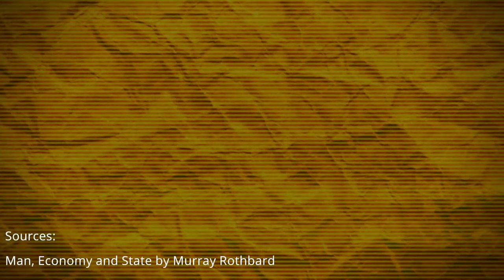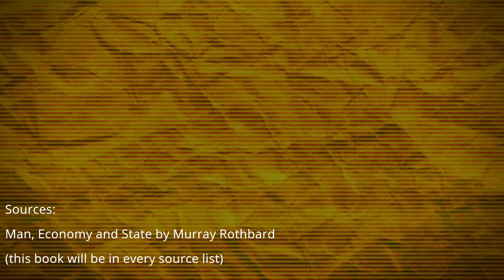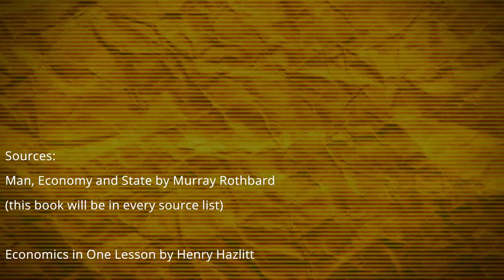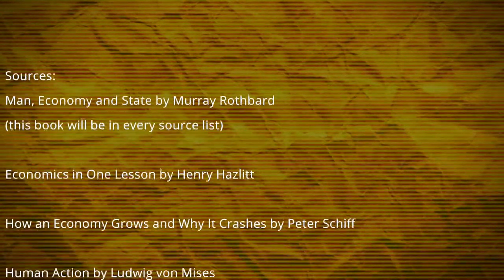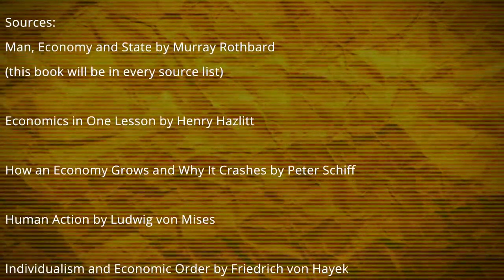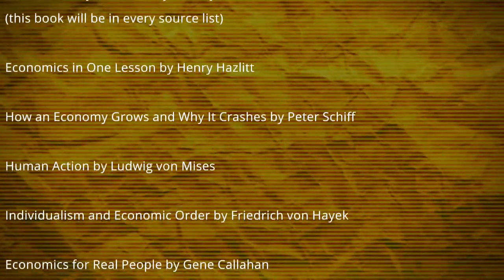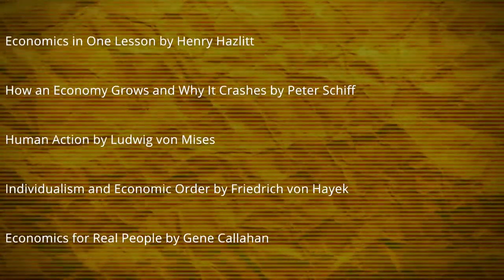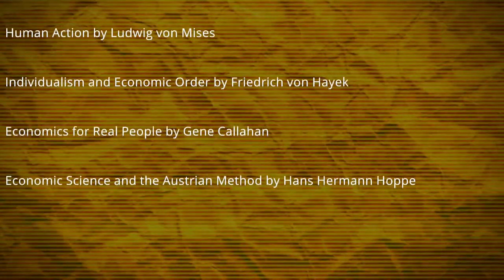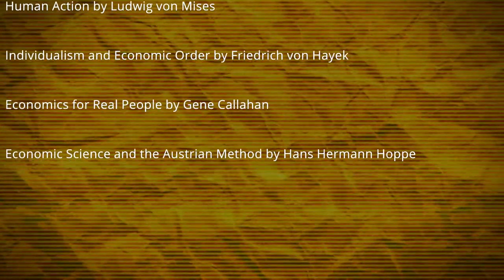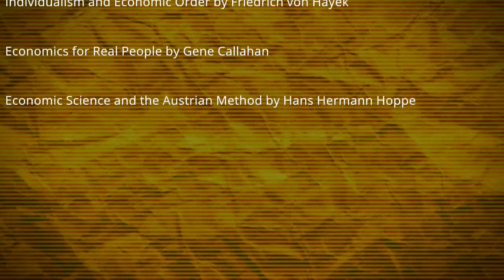Sources for Episode 0: Man, Economy and State by Murray Rothbard – this book will be in every source list. Economics in One Lesson by Henry Hazlitt. How an Economy Grows and Why It Crashes by Peter Schiff. Human Action by Ludwig von Mises. Individualism and Economic Order by Friedrich von Hayek. Economics for Real People by Gene Callaghan. Economic Science and the Austrian Method by Hans-Hermann Hoppe.